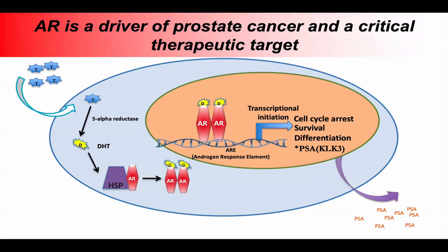Briefly, the androgen receptor is a driver of prostate cancer and a key therapeutic target, but it's also an important differentiation factor in the normal prostate. In normal prostate cells, testosterone gets converted to the more active form dihydrotestosterone, which binds to the androgen receptor in the cytoplasm, causes its translocation to the nucleus, and allows it to act as a sequence-specific transcription factor binding to androgen receptor response element motifs — in the normal prostate turning on genes involved in cell cycle arrest, survival, and differentiation. PSA or KLK3 is a classic target gene.